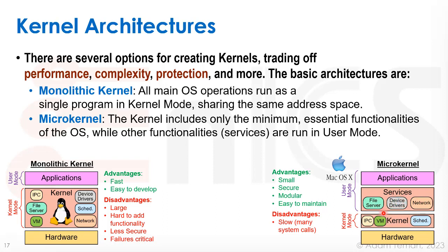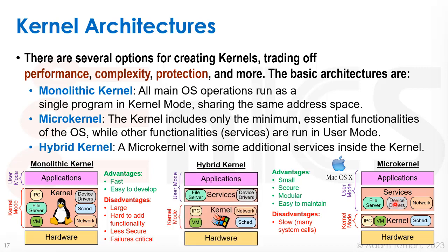The disadvantage of the micro kernel is that it's slow because we constantly have to jump between services, the kernel, and applications. That led to the hybrid kernel, which is basically what Windows NT is — an expansion of the micro kernel where some functionalities are moved back into the kernel, while more problematic components in terms of security and modularity, like device drivers, remain as services. It's a combination of the two approaches.